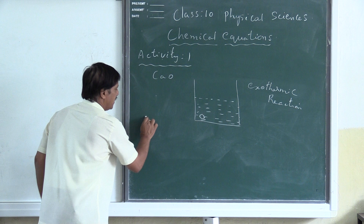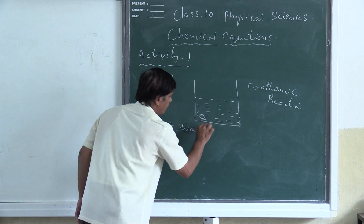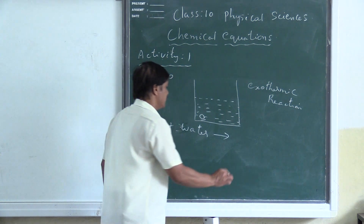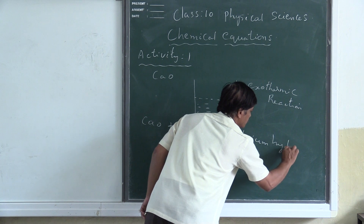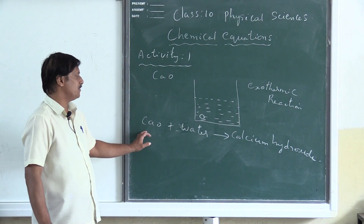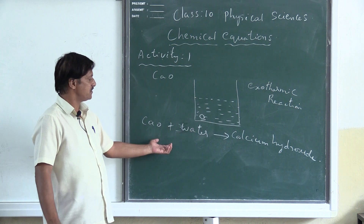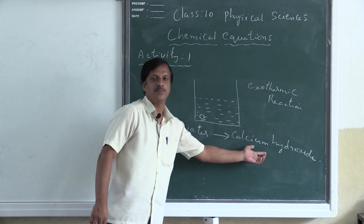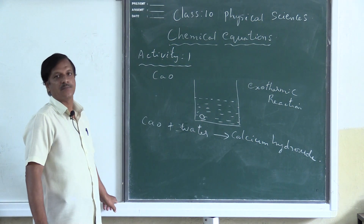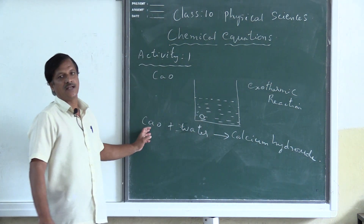In this exothermic reaction, we are taking calcium oxide and making it react with water. We get a new substance — a colorless liquid — called calcium hydroxide. From this calcium hydroxide, we cannot get back calcium oxide and water. The substances we start with are called reactants, and the substance formed is called the product. Since heat is evolved, this is an exothermic reaction. Also, two substances combined to form a single substance, so it is called a combination reaction.